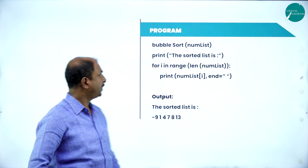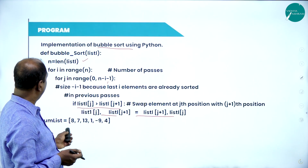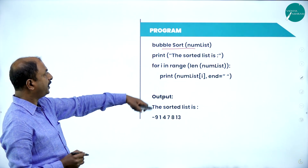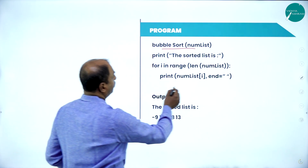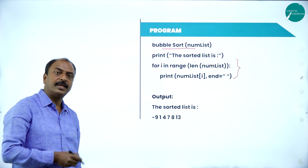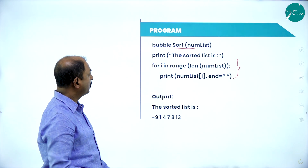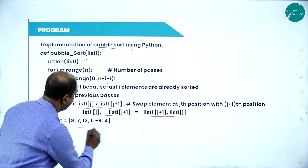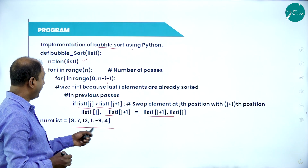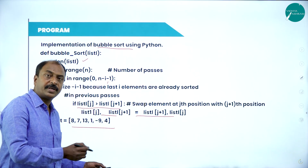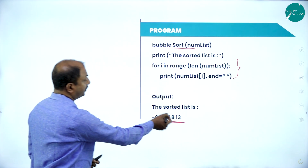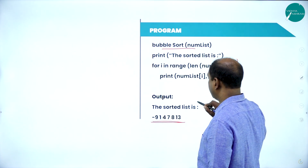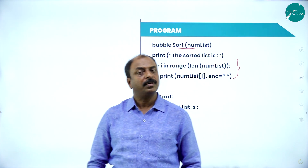Continuing the code — after defining the function, we have the number list and we call the bubble sort function. Finally, we print the final sorted list. Accordingly, we get the output. Looking at the example, these are the elements in the given list. After executing the bubble sort function, the result shows the elements arranged in ascending order. This is the Python code for bubble sort.